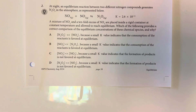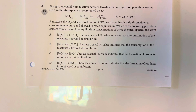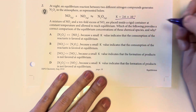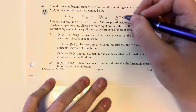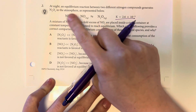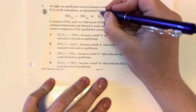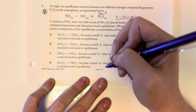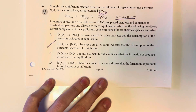An equilibrium reaction between two different nitrogen compounds generates dinitrogen pentoxide in the atmosphere as represented below. A mixture of nitrogen trioxide and a tenfold excess of nitrogen dioxide is placed into a rigid container at constant temperature and allowed to reach equilibrium. Which of the following provides a correct comparison of the equilibrium concentrations of these chemical species and why? I am going to look at my equilibrium constant — it is a very, very small number, so relative to the concentrations of my reactants, I am going to have a very small amount of product. I will eliminate any choices that have the product as a larger value.